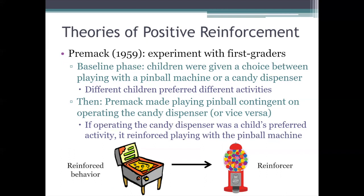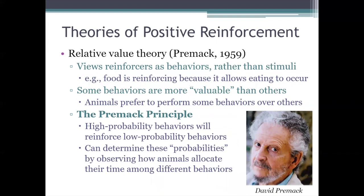Different kids had different preferences — for some, playing pinball was the more probable behavior; for others, eating candy was. But whatever that preferred behavior was for a particular kid, it was able to reinforce — to strengthen and make more frequent — whatever that kid's less preferred behavior was. And that's exactly what the Premack principle predicts: if you've got to perform a less probable behavior before you can perform a more probable one, we're going to see reinforcement of that less probable behavior.